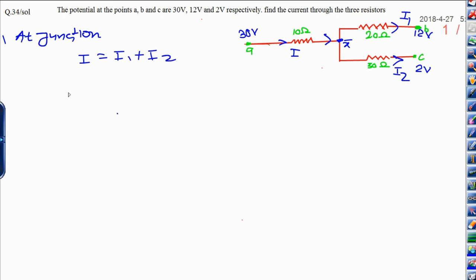You need to calculate the value of I. What is I? I is V upon R. V means potential difference. What is potential difference here? You can see that is 30 minus X divided by R is 10, is equal to potential difference across I1, that will be X minus 12 upon 20.